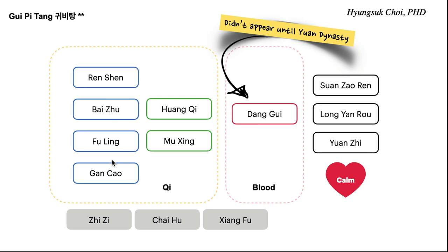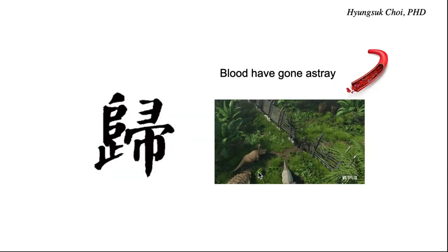Heart and spleen both take care of ying qi — the blood. When the spleen is weak, it cannot hold and control the blood. It is like a farm dog taking care of sheep and goats — if the farm dog does not work properly, the sheep will go astray everywhere. Guipi Tang gathers those sheep back inside the fence. This is an analogy of bleeding.